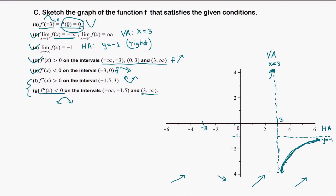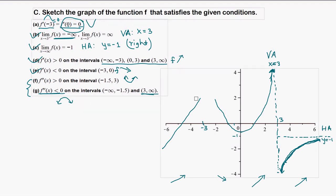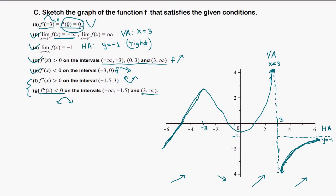Going up, down, then up — and eventually the function approaches the horizontal asymptote. There's nothing else to satisfy. So the graph goes up all the way to negative 3 for a local max, then down, then up toward 3, going to positive infinity from the left. The derivative at negative 3 equals 0 is a local max; derivative at 0 equals 0 is a local min. That completes part A.